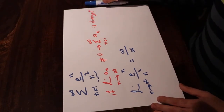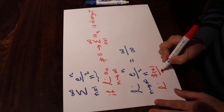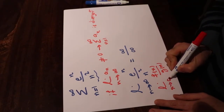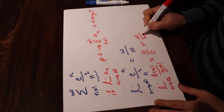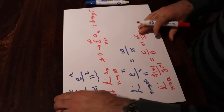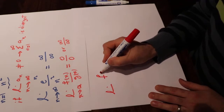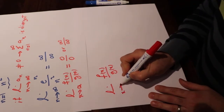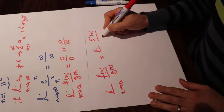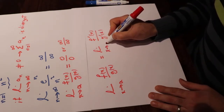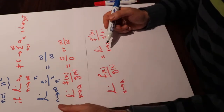From the limit rule, we know that when the limit of f(x) divided by g(x) as x tends to a is equal to 0/0 or infinity/infinity, you can conclude that the limit of f(x) divided by g(x) as x goes to a will be equal to the limit of the derivative of f(x) divided by the derivative of g(x) as x goes to a. So here we can use this rule to calculate this limit.